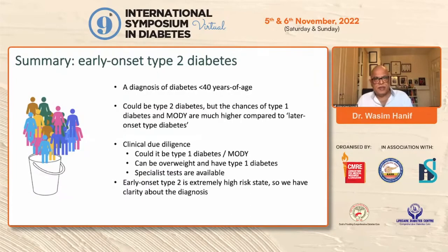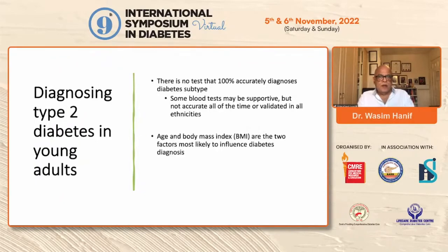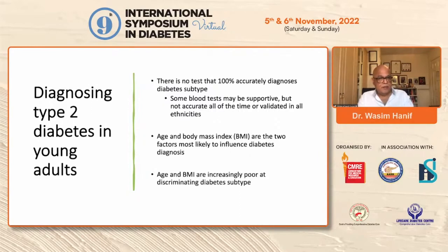What is the summary for early-onset type 2 diabetes? It is a diagnosis of diabetes less than 40 years of age. It could be type 2 diabetes, but the chances of type 1 diabetes and MODY are much higher compared to later onset of diabetes. We need to practice clinical due diligence and ask ourselves: could it be type 1? Could it be MODY? Can a patient be overweight and have type 1 diabetes? Specialist tests are available. Age and BMI are increasingly poor at discriminating diabetes subtypes.